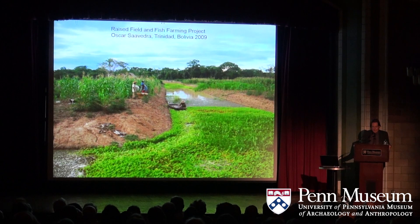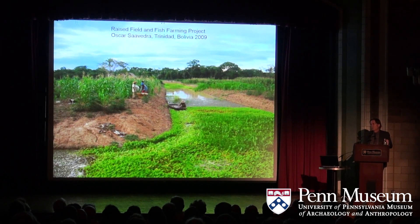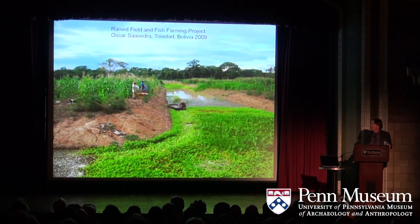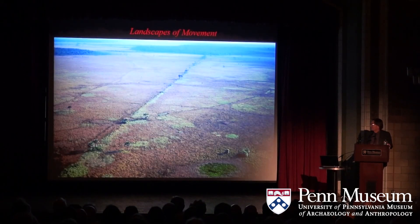A Bolivian project run by my colleague Oscar Saavedra, an economist, worked with the European Economic Community and got funding to work with four communities. They actually built their fields not by hand but using machinery, and as far as I know these are still thriving communities. You can see corn growing on what is very poor soils. They're producing nutrients in the canals — that's blue-green algae and water hyacinth that they scoop out of the canals, let it grow, scoop it out, and mix it in as an organic amendment to the soils.